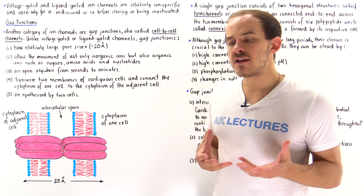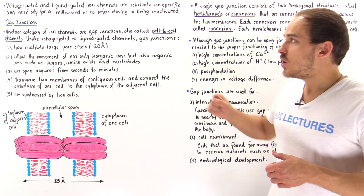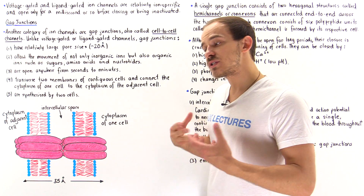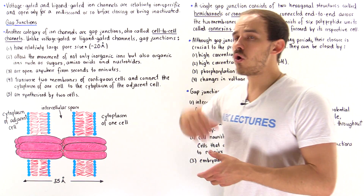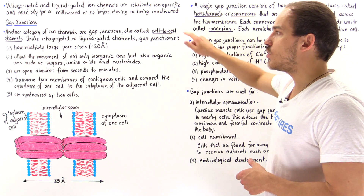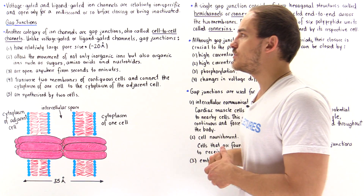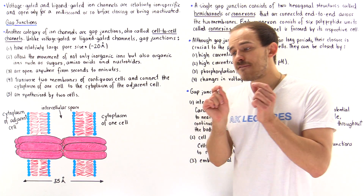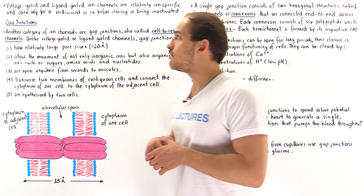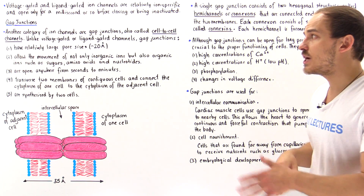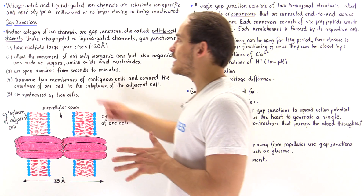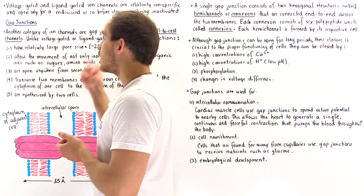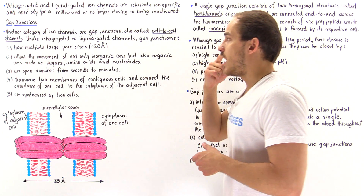So far in our discussion on ion channels, we've focused on two types: voltage-gated ion channels and ligand-gated ion channels. Now we move on to a slightly different category called gap junctions, also known as cell-to-cell channels. Although gap junctions are in fact ion channels, they have very different properties, and there are five important things that differentiate them from voltage-gated and ligand-gated ion channels.